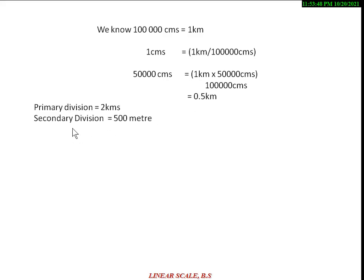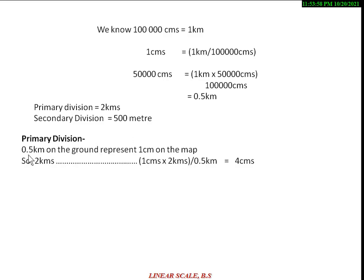Now, the primary division is 2 km and secondary division is 500 meters. Since 0.5 km on the ground represents 1 cm on the map, the primary division value of 2 km equals 4 cm on the map. So primary division: 2 km equals 4 cm.